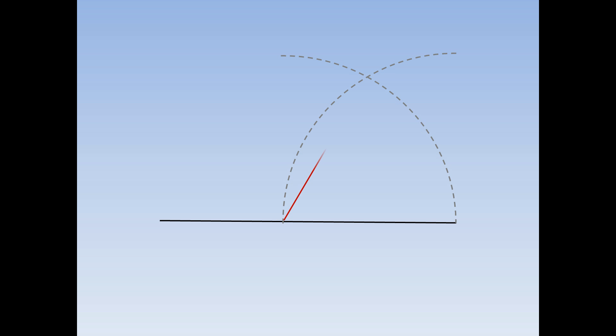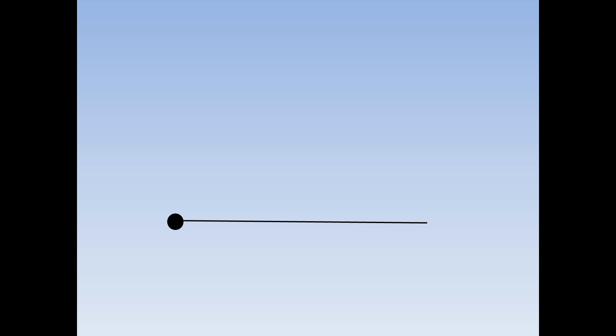Finally, join up the line and the place where the two quarter circles cross over each other. This is an equilateral triangle. We are going to construct an equilateral triangle on this line. Take your compass and put the sharp end on the end of the line and draw a quarter circle. Keeping the compass exactly the same length, move the sharp end over here and draw another quarter circle.